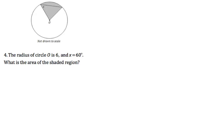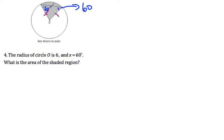If x is 60 degrees, we need to know that this angle here is also 60 degrees. Why? Because these two sides are equal since all radii are equal, so the angles opposite the equal sides also have to be equal. That means both base angles are 60 degrees, and since two angles sum to 120 degrees, the third angle also has to be 60 degrees.